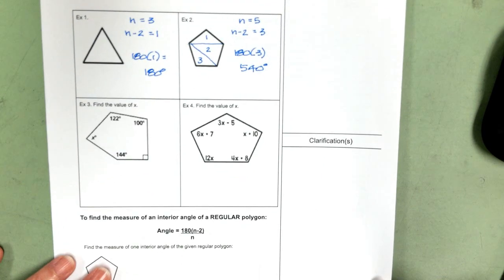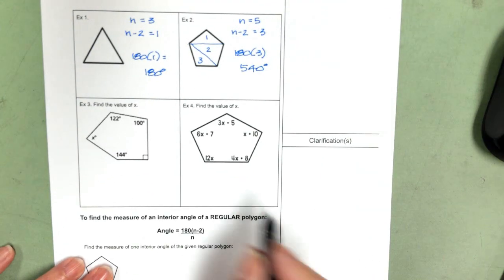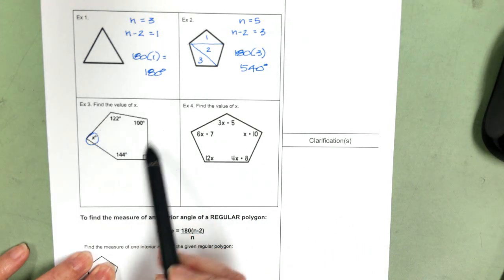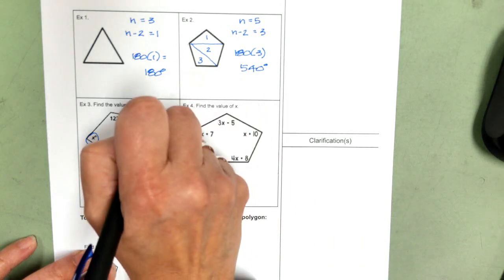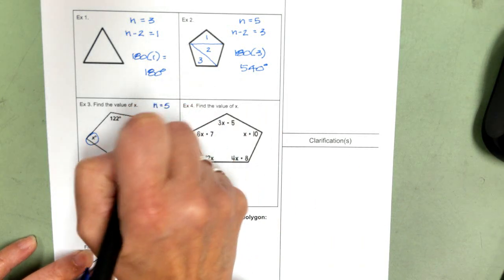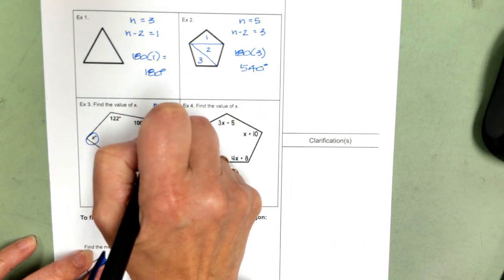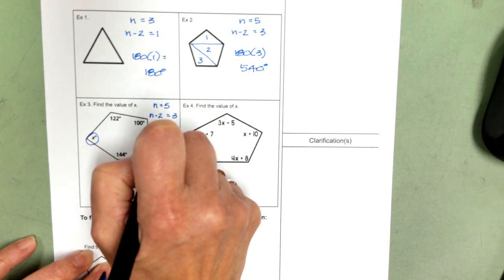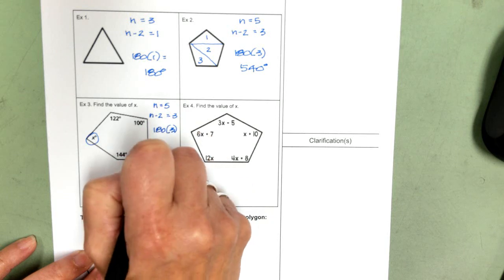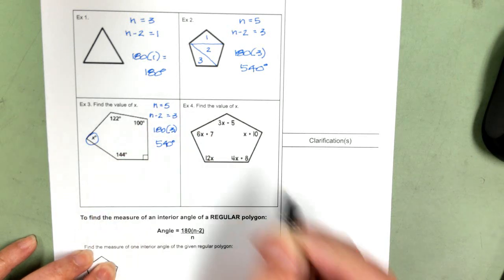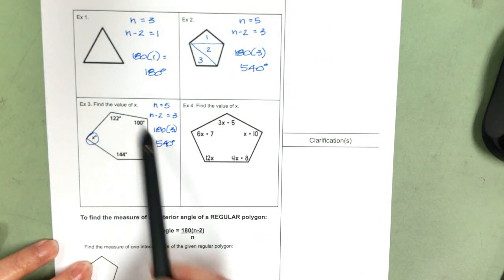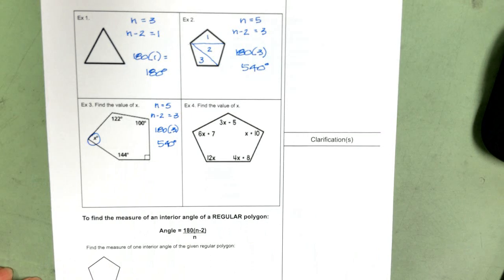So now, in these examples, we want to find the value for x. The first thing I'm going to do is count up my sides. One, two, three, four, five. I have n equals five. So n minus two equals three. So the sum of all the angles is going to be 540 degrees. Why do I want to know the sum of the angles? Because I'm going to use the old part plus part equals whole. And I have one, two, three, four, five parts.